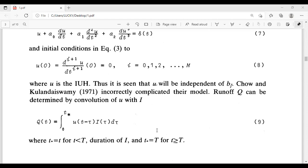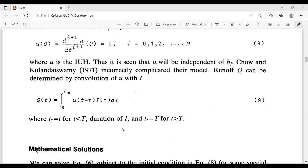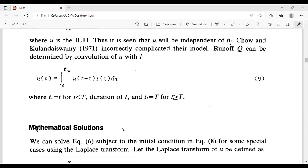Of bj. Chow and Kulandaiswamy incorrectly complicated their model. Runoff Q can be determined by convolution u with i. Q(t) equals integral 0 to t* u(t - tau) i(tau) d tau. Where t* equals t for t less than t duration of hydrograph, t0 equals t plus for t greater than or equal to t.